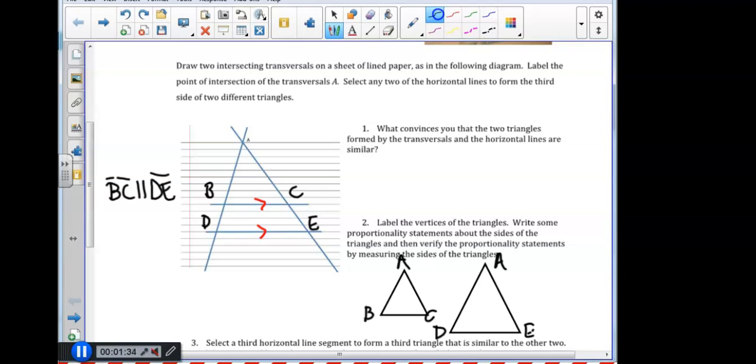In number 1, it says what convinces us that the two triangles formed by the transversals and the horizontal lines are similar? We will recall our two properties of similarity. We do know that triangles can be similar if we only know two angles, which was our angle-angle similarity theorem. If I look at the smaller triangle ABC and then the larger triangle ADE, I do notice that both of those triangles share angle A, which means that those two angles are congruent.